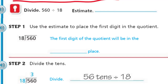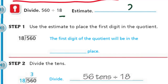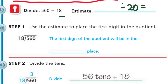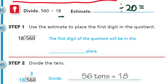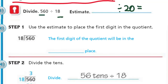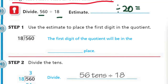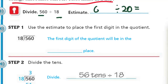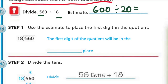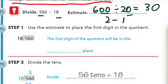It says divide: 560 divided by 18. I look at that divisor — that's typically what I like to estimate first. So if I put a 20 there, I'm going to take the dividend and divide it by 20. We have 56. What's close to 56? It probably works better to use 600, because then we can take 6 divided by 2, which is 3, and subtract 2 minus 1, giving us 30. Now it says use the estimate to place the first digit in the quotient — we know the first digit will be in the tens place.